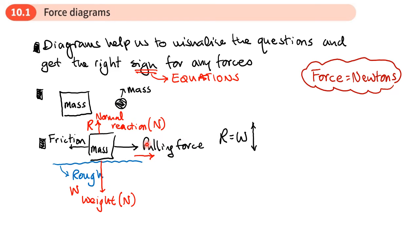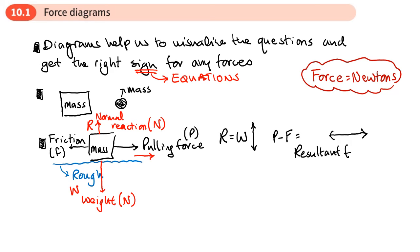When forces are unbalanced we have something called a resultant force — basically the force that is left over. So let's say the pulling force was 50 newtons and the frictional force was 20 newtons: 50 pulling and 20 stopping it gives a resultant force of 30 newtons — 50 minus 20. So if we look at the forces in this direction, the pulling force P minus the frictional force F equals what we call the resultant force — think of it like the leftover force.